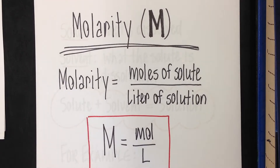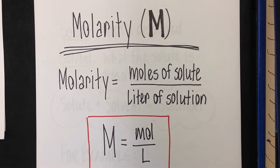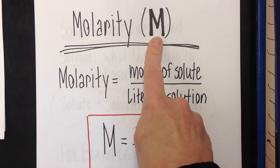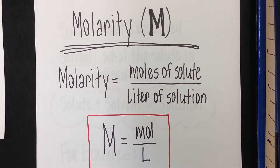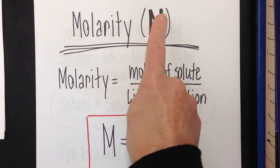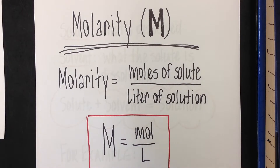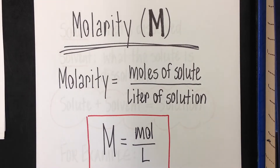I'm going to go through this lesson for someone who has never seen molarity and give you the basics. The symbol for molarity is a big capital M — uppercase. I always tell my students it's a pointy M, comes to a point on the top, not like a McDonald's M, which is rounded on top. That's actually important because we use M for several things in chemistry. Molarity is simply the moles of solute divided by the liters of total solution.